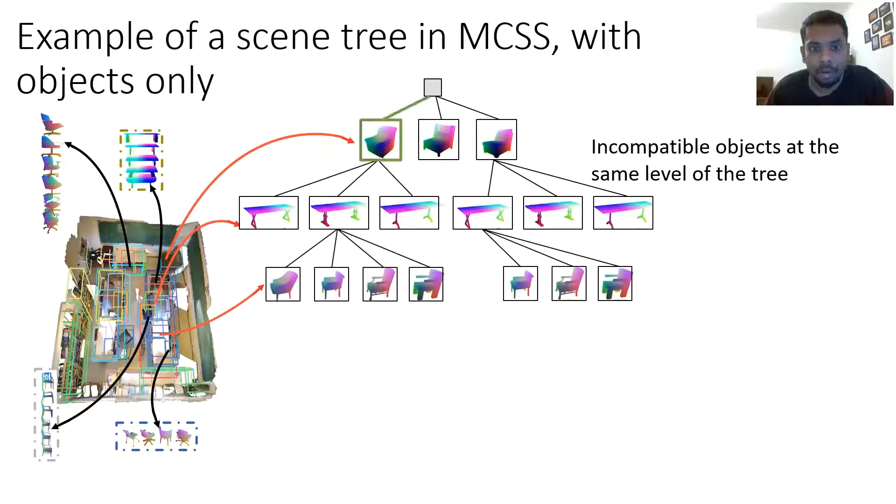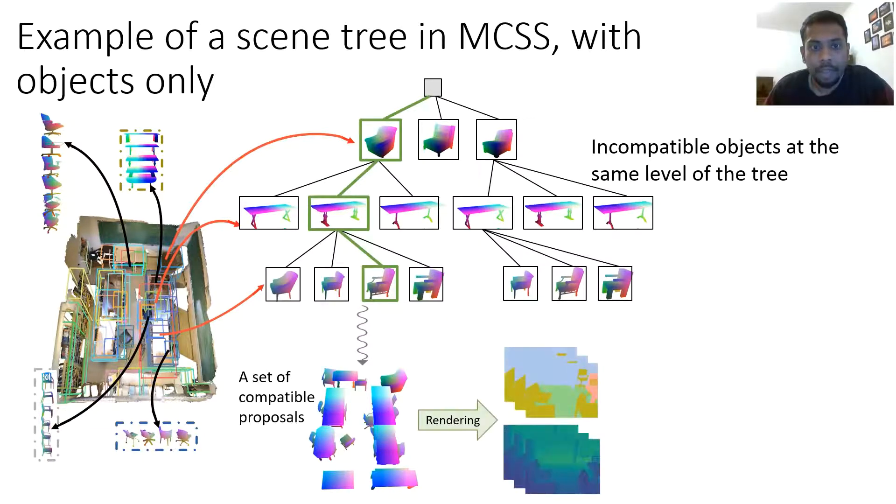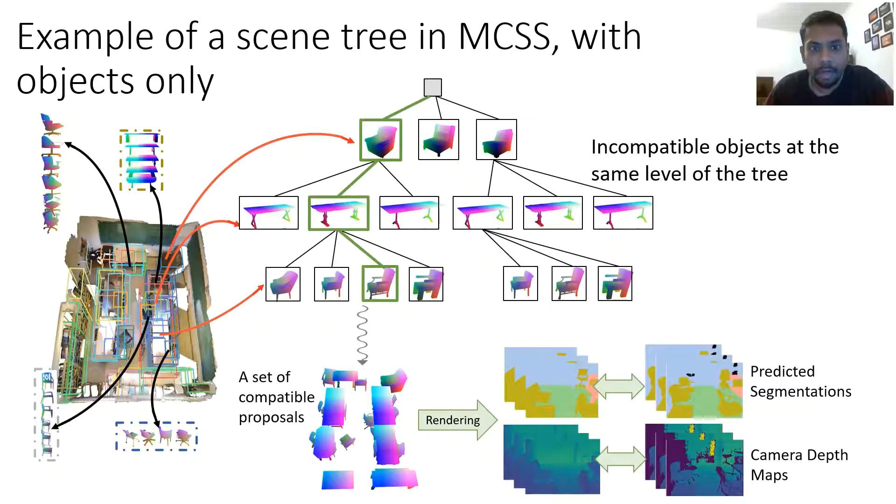Following a path in our scene tree results in a set of proposals that are all compatible with each other. We then render this subset of proposals to multiple views and compare with predicted segmentations and depth maps. As the objective function is evaluated only at the leaf nodes, MCTS avoids getting stuck in local minima.